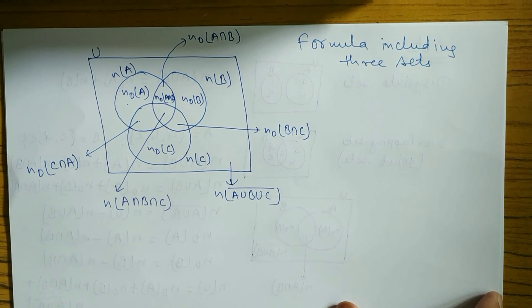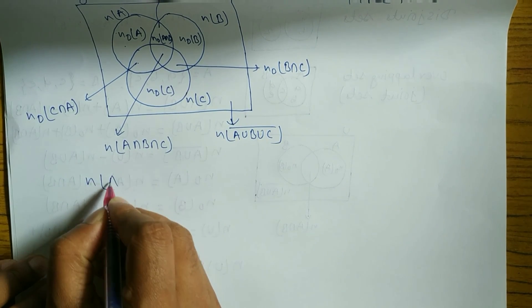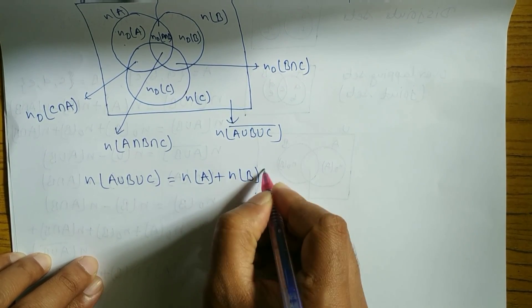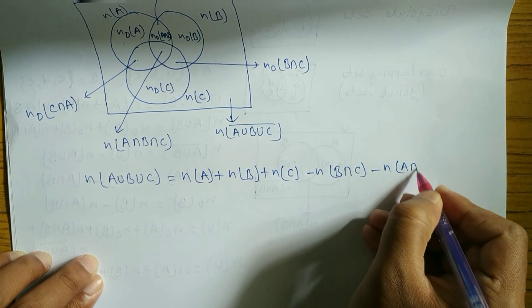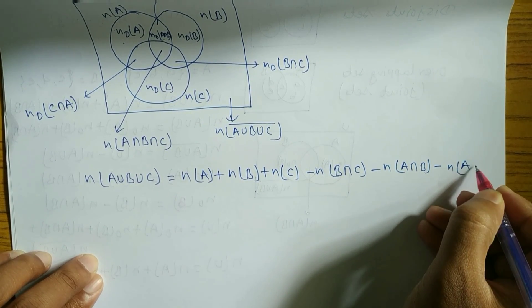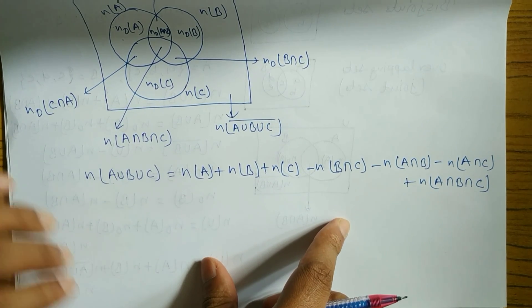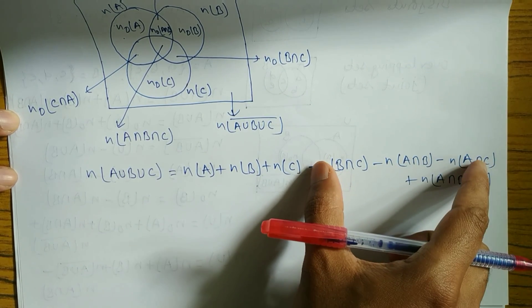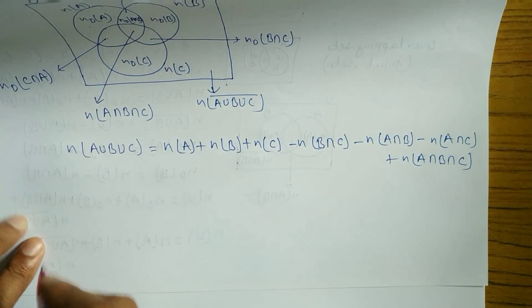Now the formula: n(A∪B∪C) = n(A) + n(B) + n(C) − n(A∩B) − n(B∩C) − n(A∩C) + n(A∩B∩C). The three individual sets are added, then the three pairwise intersections are subtracted, and the triple intersection is added back.